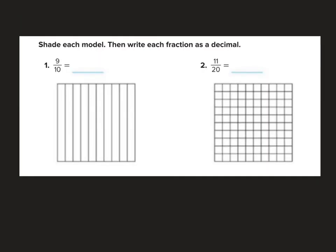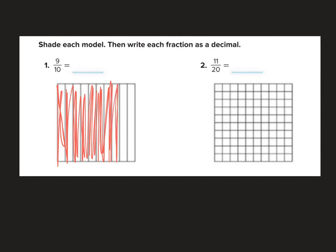Okie dokie. We have two more problems here. I just wanted to show you as an example, so you can be successful on your assignment. Shade each model. Then write each fraction as a decimal. So if I wanted to shade 9 out of 10 on here, 1, 2, 3, 4, 5, 6, 7, 8, 9. All of them but 1. Okay, go side to side here. Get it all colored in. I would have 9 out of 10, 9 tenths. And how would I write 9 tenths as a decimal? 0 and 9 tenths.